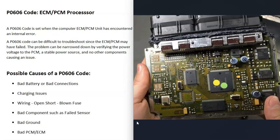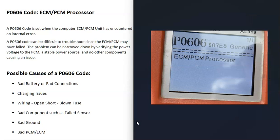A P0606 code can be kind of difficult to troubleshoot, since it is possible that the ECM or PCM has gone bad, but it can also be caused by other things. If you can verify that these other things are working properly, that can help you narrow down whether the main computer is actually the problem. So what are some possible causes of a P0606 code?